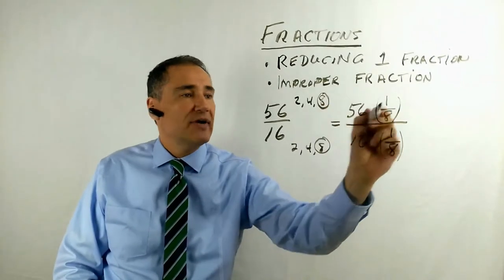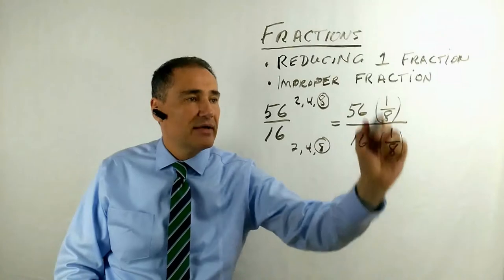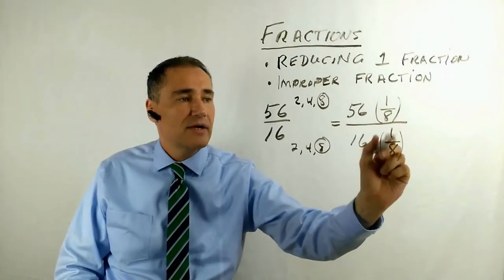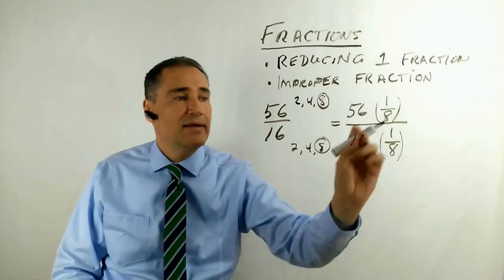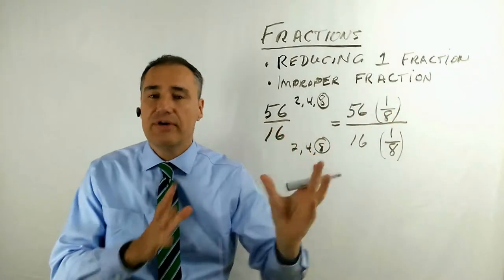So you take the highest common factor and you invert it and multiply it on the numerator and the denominator, because 1 over 8 divided by 1 over 8, remember that's just equal to 1. And when you do that, you're not changing the value of the fraction.